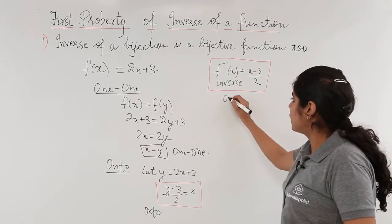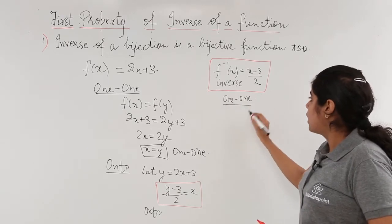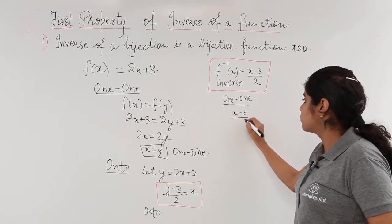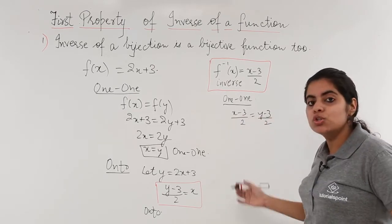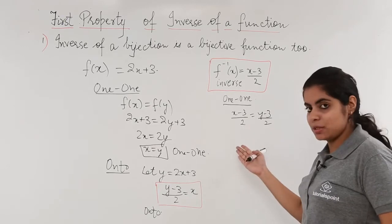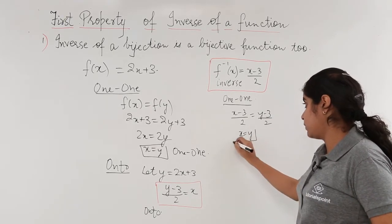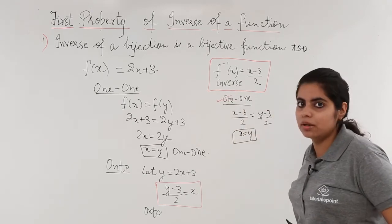So let's check it for one-one. I check it for one-one. Let f(x) is equal to f(y), that means (x-3)/2 is equal to (y-3)/2. When 2 gets cancelled, x-3 is equal to y-3, that means x is equal to y. That means yes, my inverse is at least one-one by now.